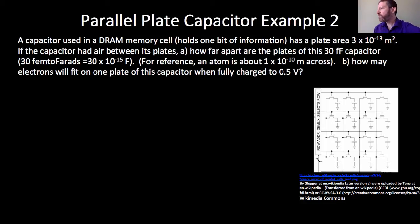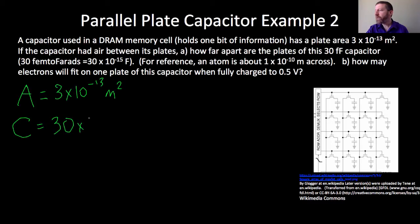So, what we are given here, let's go ahead and write down our givens. The area A is equal to 3 times 10 to the negative 13 square meters. The capacitance is also given to us as 30 femtofarads, typical for a DRAM cell. 30 times 10 to the negative 15 farads. And we want to figure out, assuming that it's a parallel plate, how far apart the plates are. We want to know what D is.